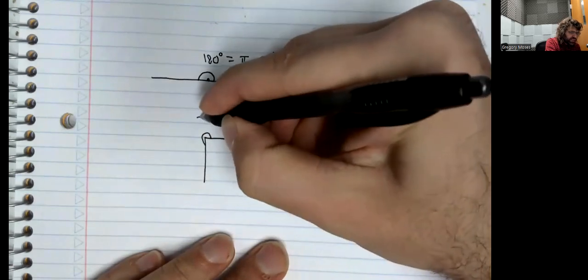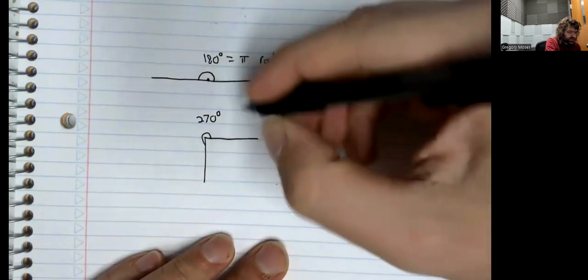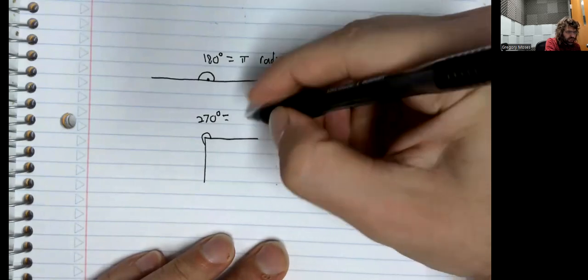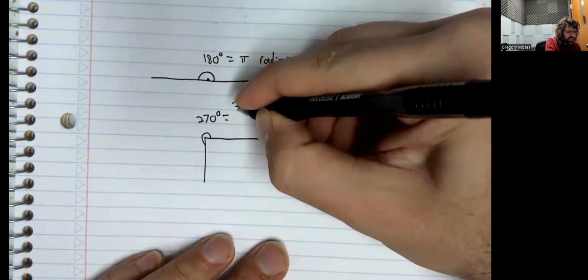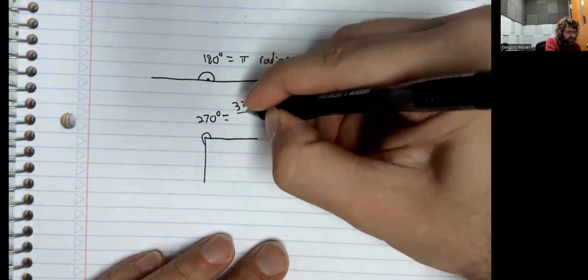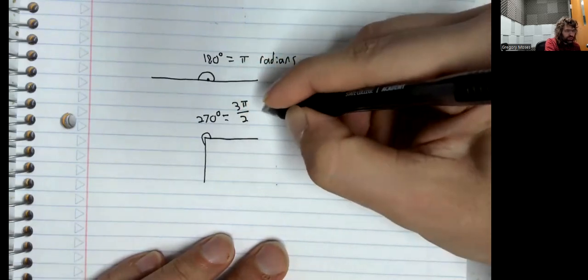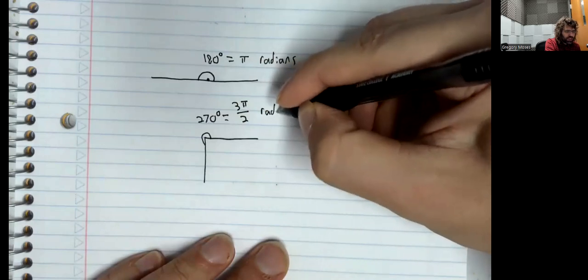A 270-degree angle is 3 pi over 2 radians.